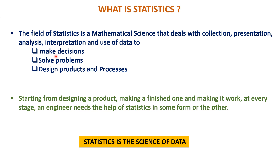Statistics is playing a very vital role in data science, specially to make decisions, solve complex problems, and design products — like what we are going to do in Unit 5, design of experiments. Statistics is used at every stage, starting from designing, making a finished product, and also making it work. As an engineer in your workplace, you will see the value of statistics at every stage. In simple terms, statistics is simply the science of data — how to utilize it, interpret results, and proceed further.